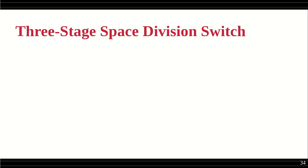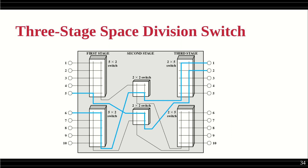To address these issues, we have a second category called the multi-stage switch. Here we have an example of a three-stage switch, which can be generalized to any number of stages. In the first stage there are two 5x2 switches, giving 10 cross points each. Between stages there are 2x2 switches, and the final stage has two 2x5 switches. This is a more flexible connection approach.